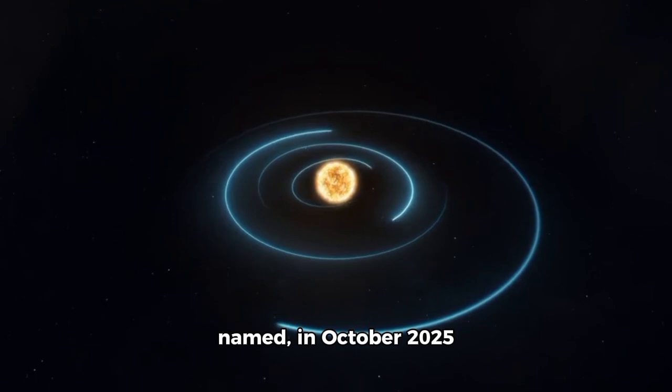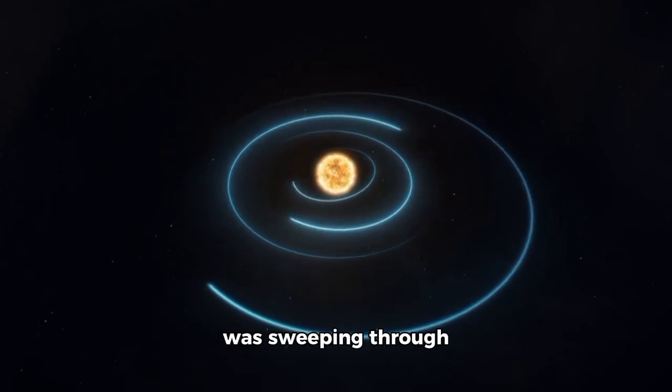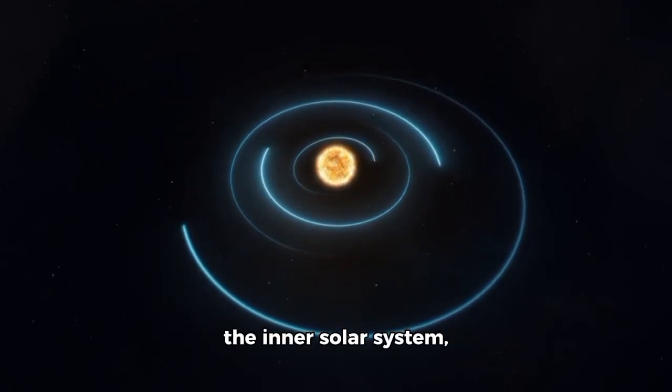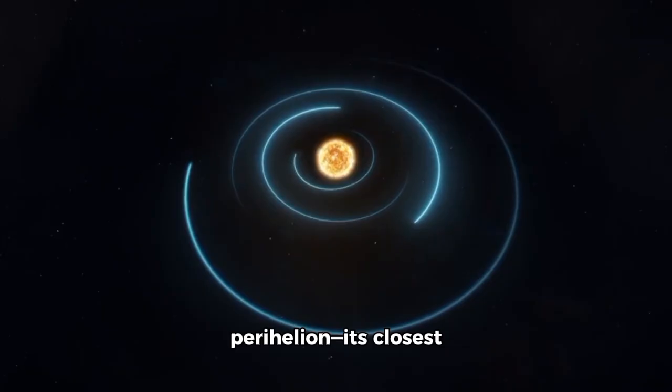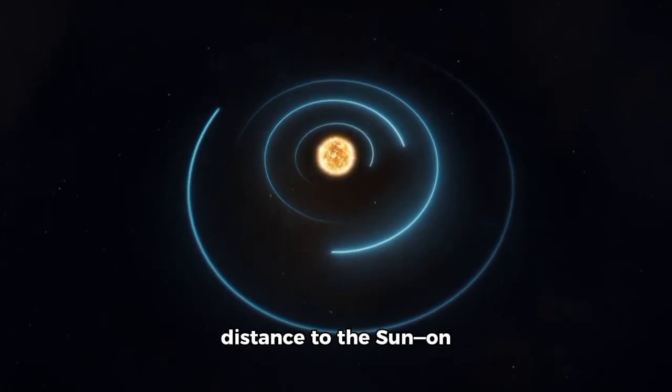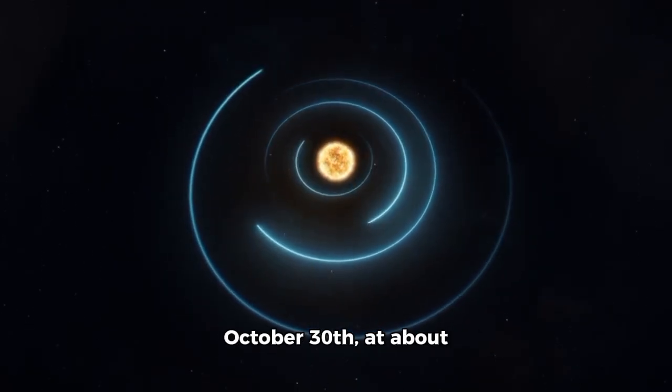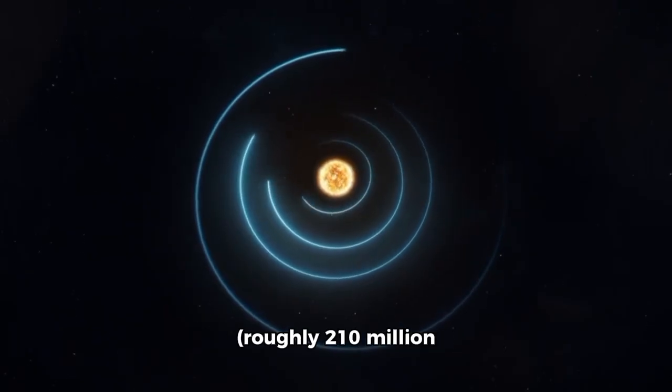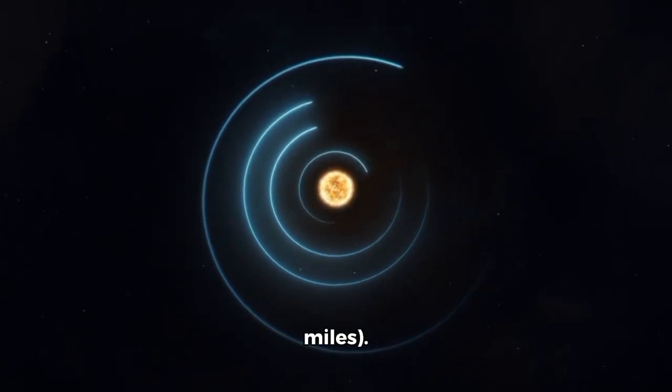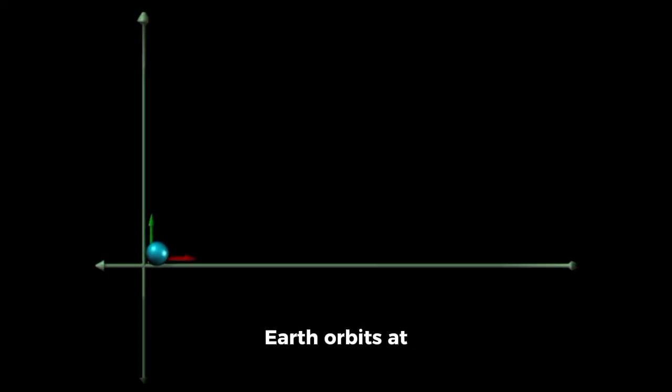3I Atlas, as it was named, in October 2025 was sweeping through the inner solar system, approaching its perihelion—its closest distance to the sun—on October 30th at about 1.4 astronomical units, roughly 210 million miles. For comparison, Earth orbits at one astronomical unit.